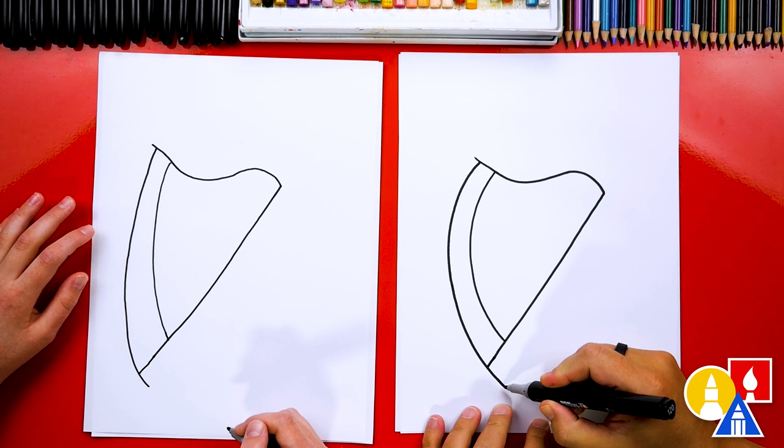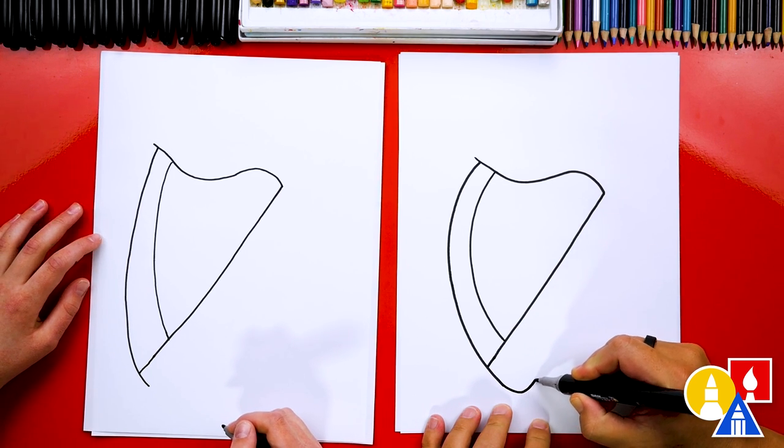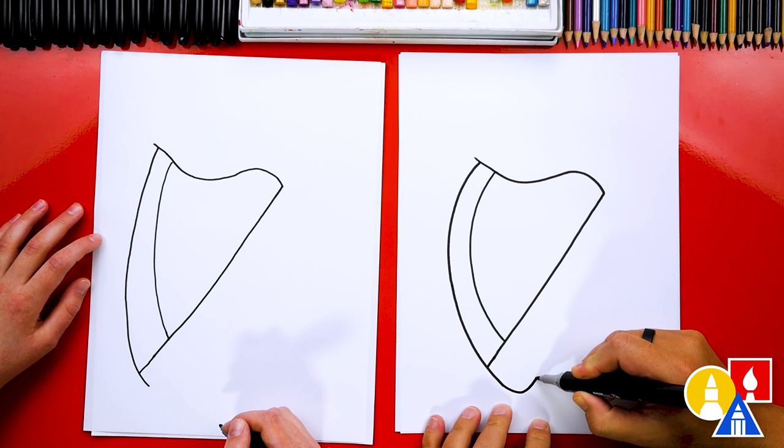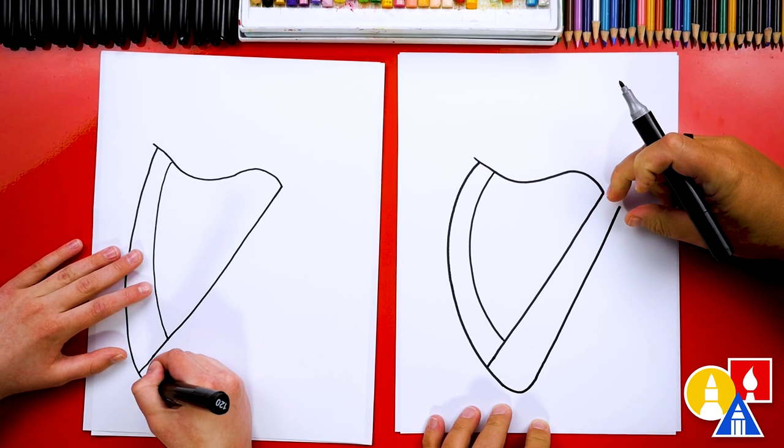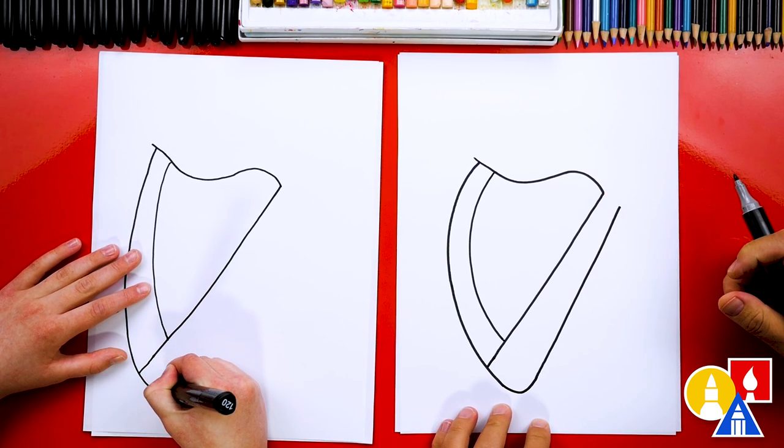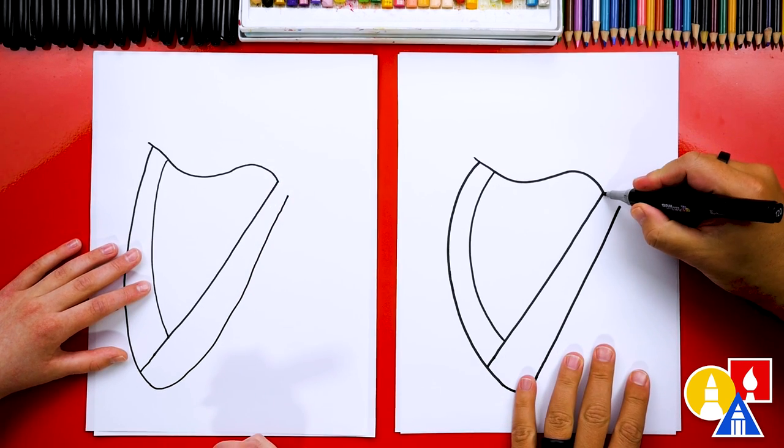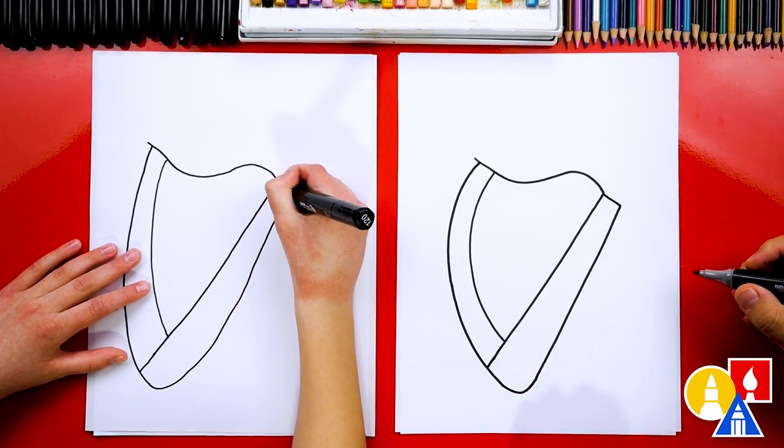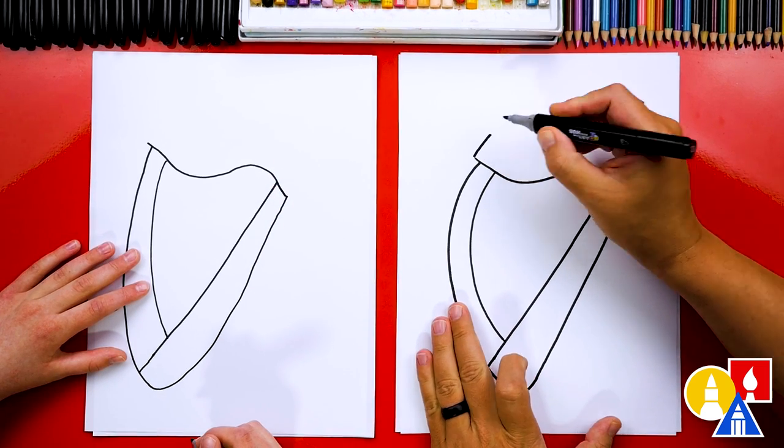And then here, I'm going to draw a curve like this. I'm going to curve around and then I'm going to come back up here. And let's see how I'm getting closer here too. And then right here, I'll connect those two lines together. And then let's draw a short line here also.